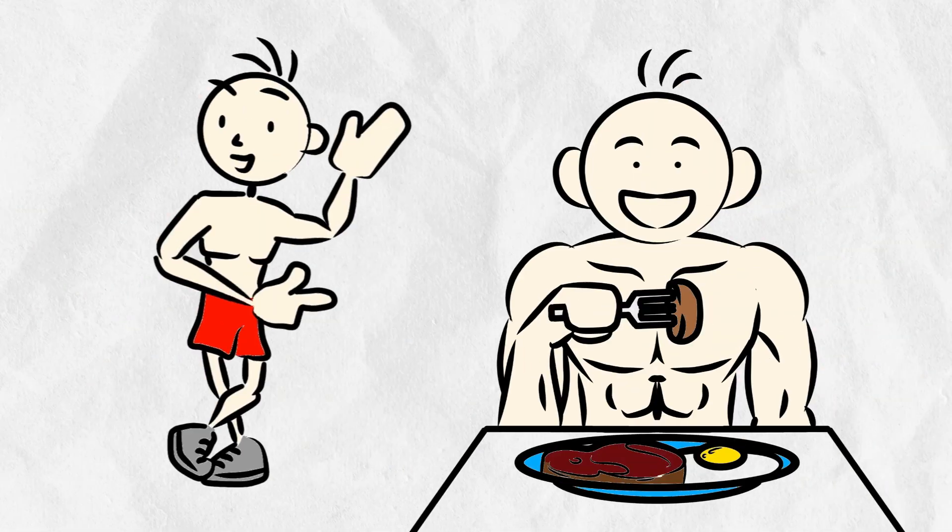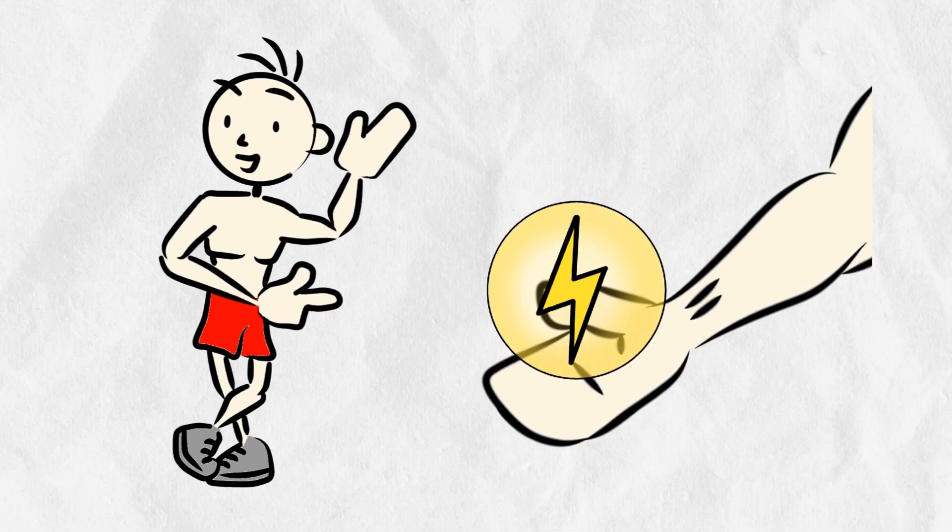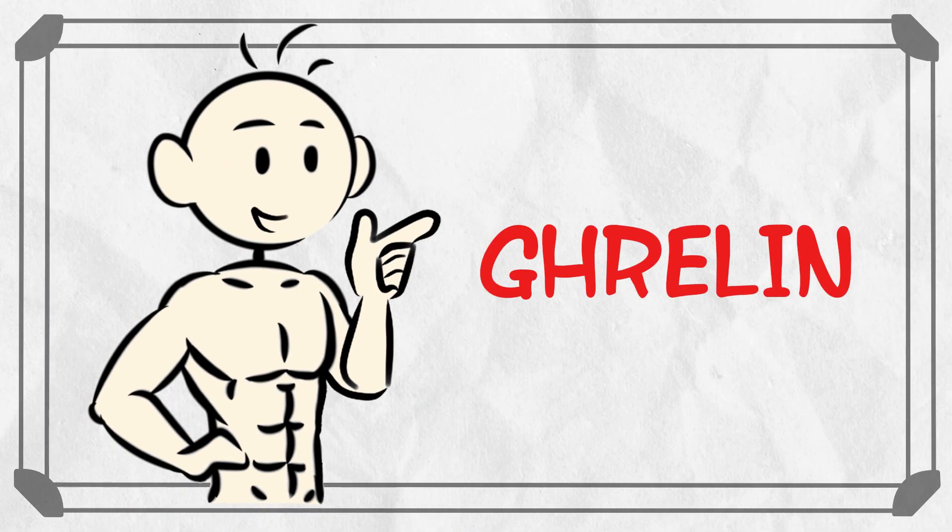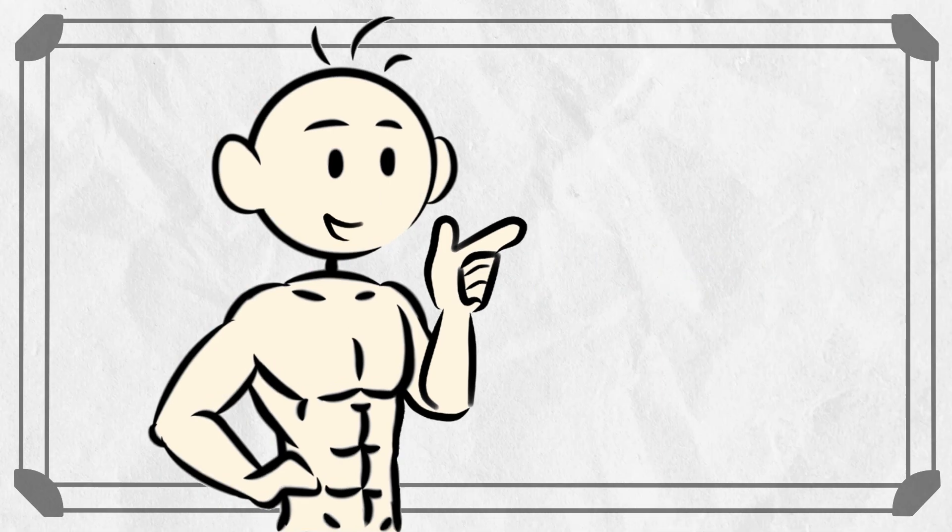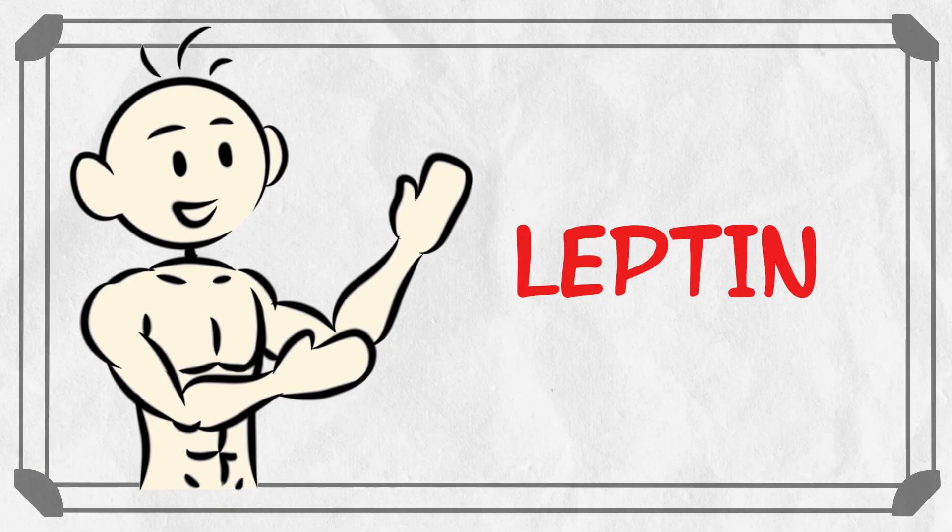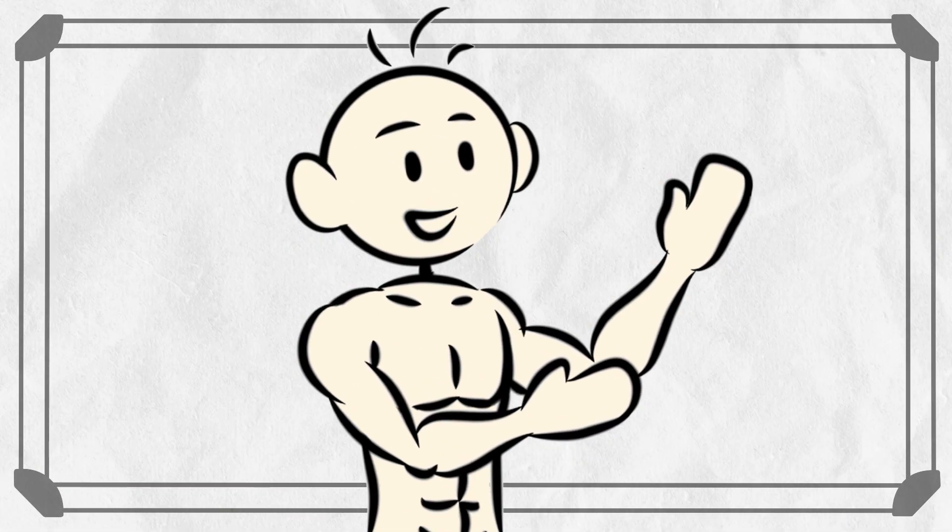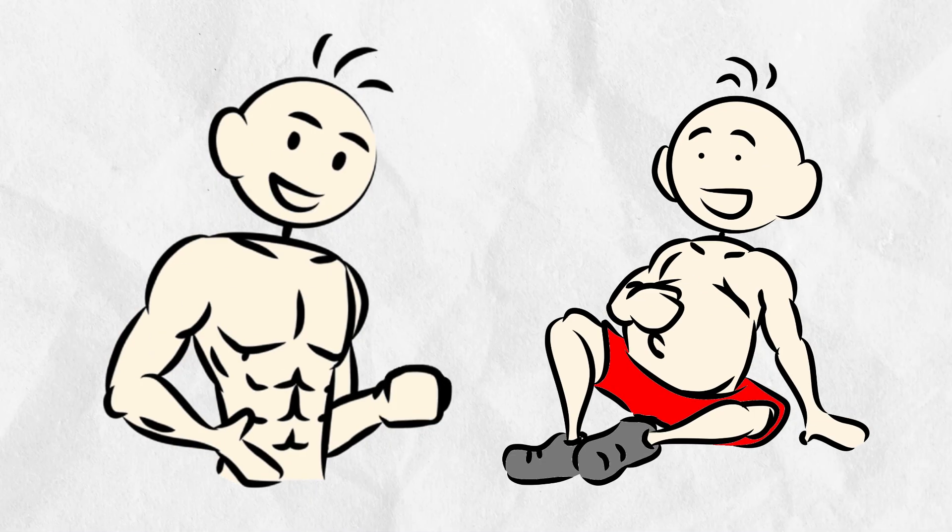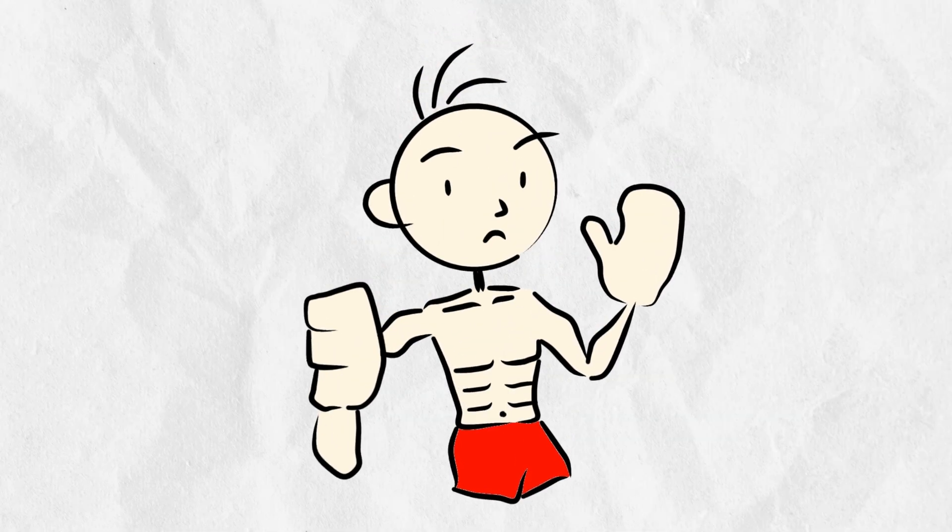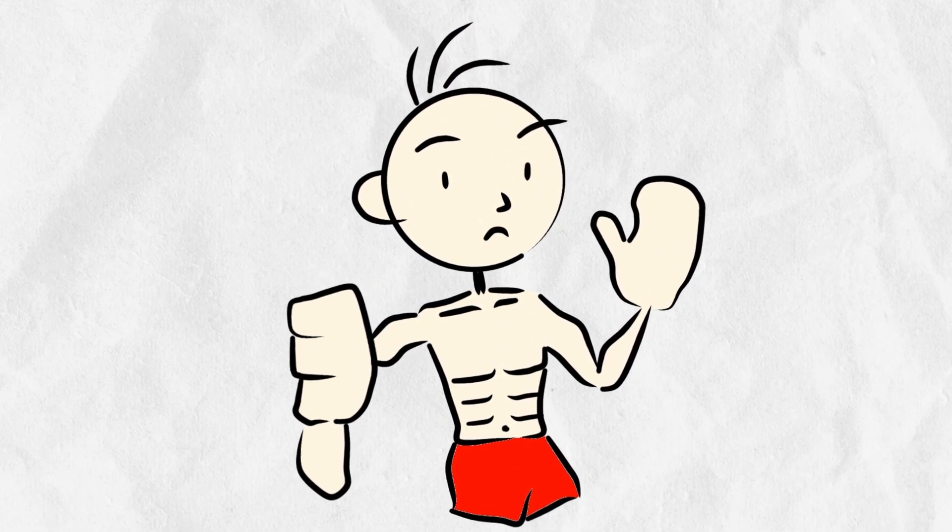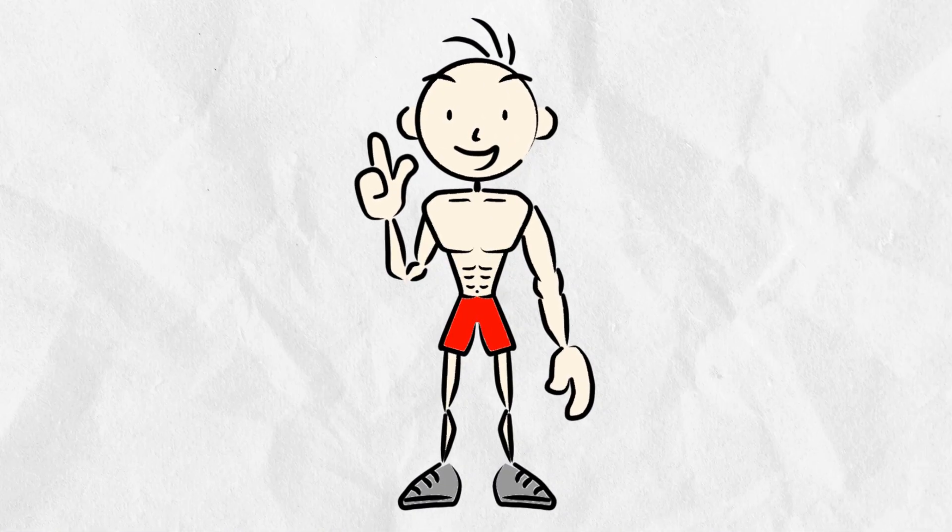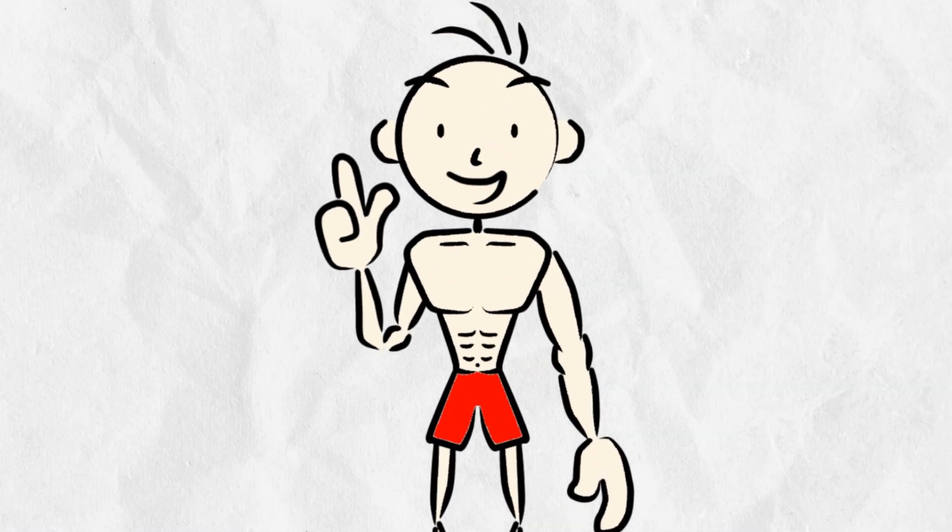It's like a factory working overtime, turning all that fuel into usable energy and storage for later. During this time, hunger hormones take a back seat. Ghrelin, the pesky hormone that makes you crave food, goes on a coffee break, while leptin, the hormone that tells you you're full, clocks in. It's like your body's way of saying, relax, we're good for now. This is why you feel satisfied after a big meal, even though the satisfaction doesn't last forever. But, spoiler alert, this won't last forever. Eventually, all that food gets processed and your body is ready for what comes next.